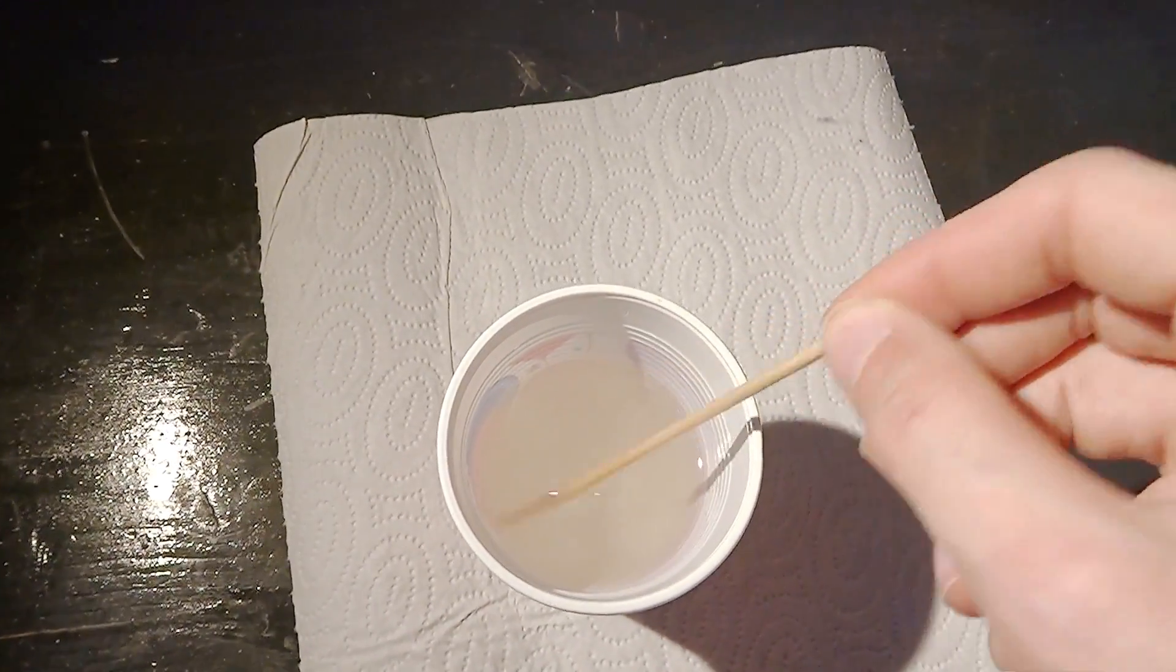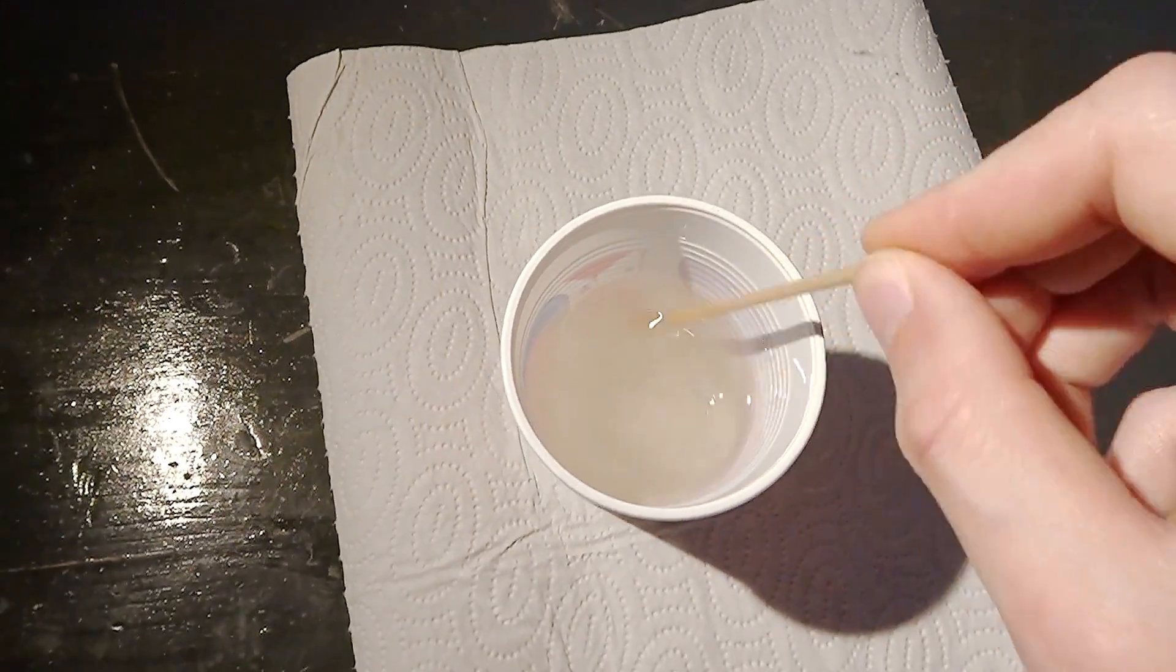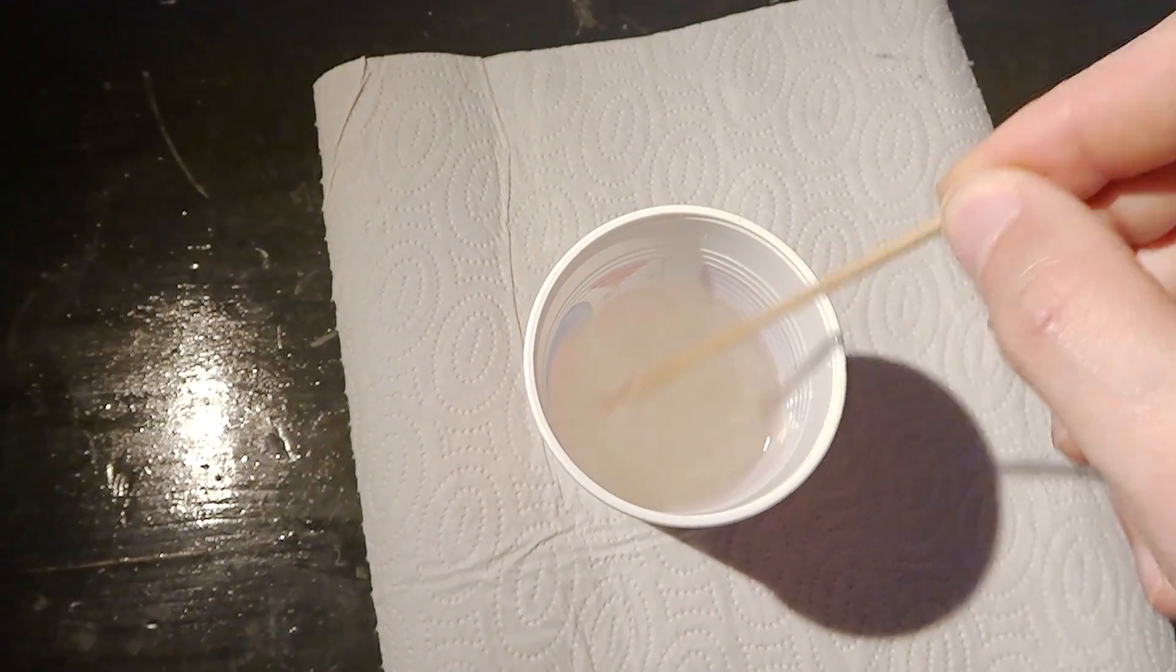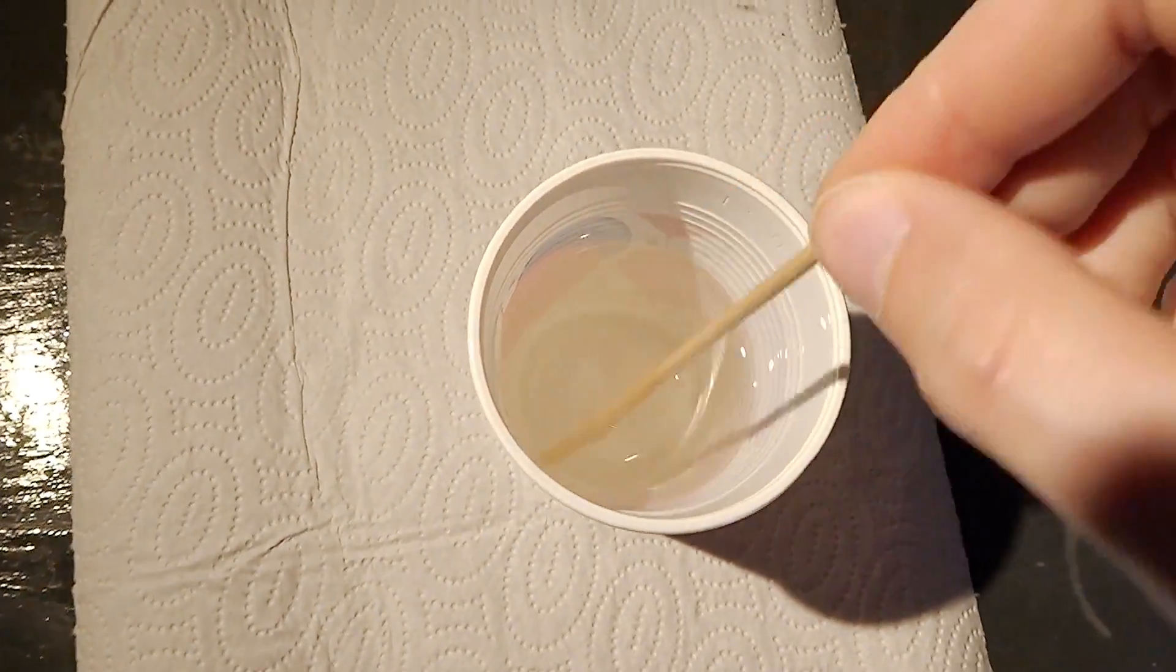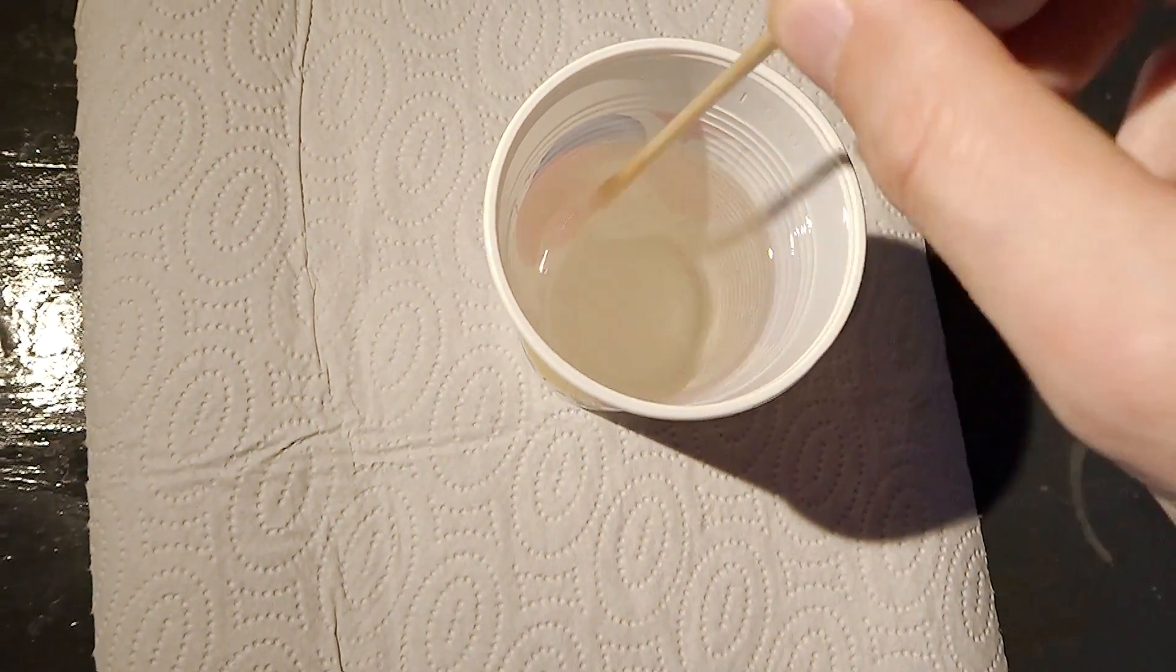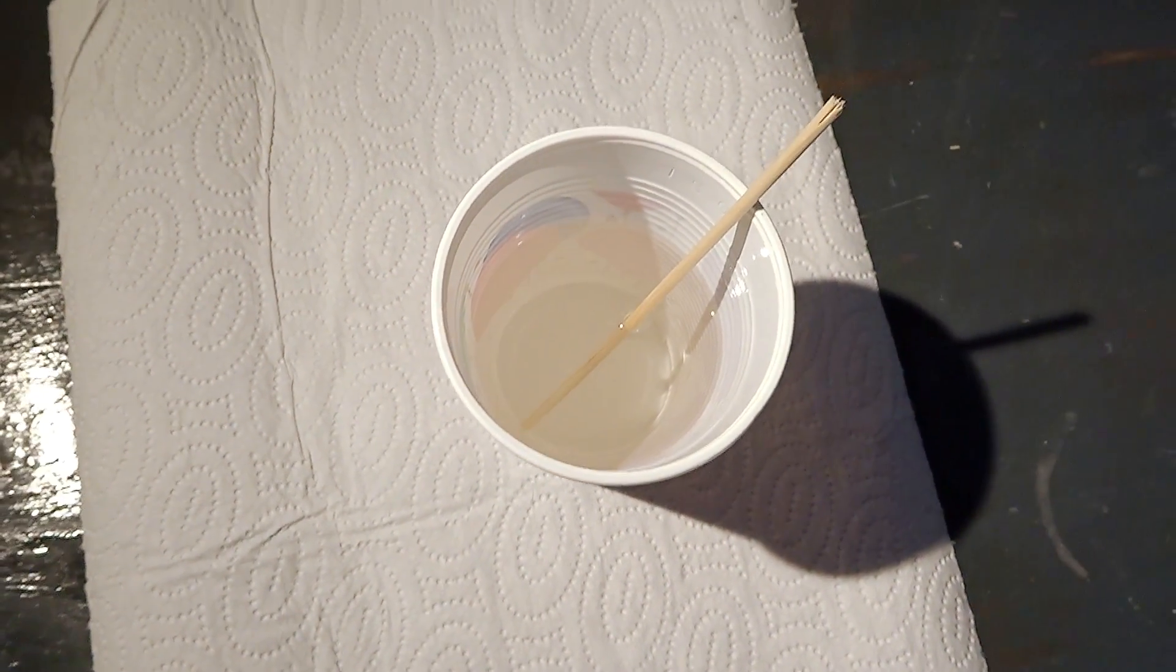Mixing the epoxy is a crucial part. After adding the two components, it should look like this milky fluid. After mixing it a couple of minutes, it should, as the name indicates, become water clear.